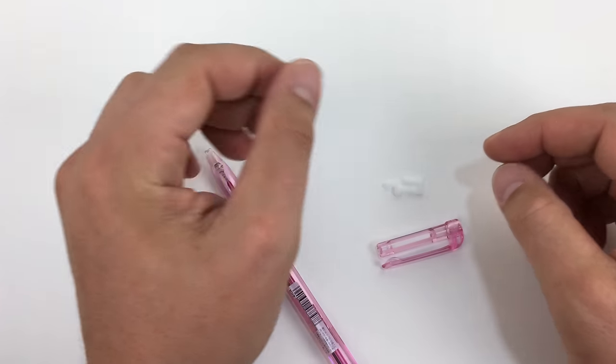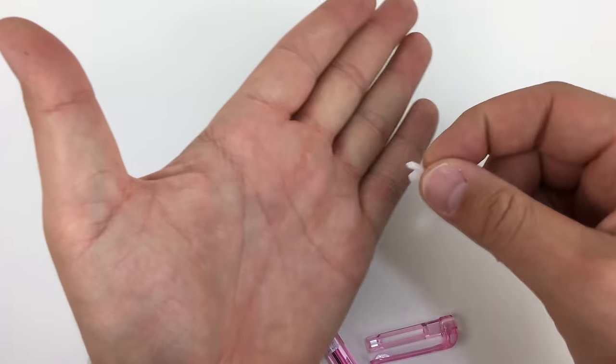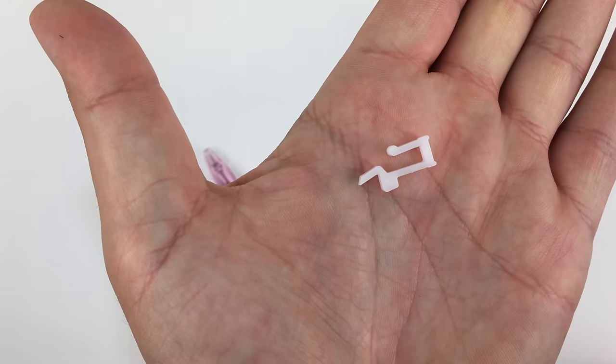So I'm going to show you the pieces here. This is the cap, and this little white piece is kind of where all the magic is.